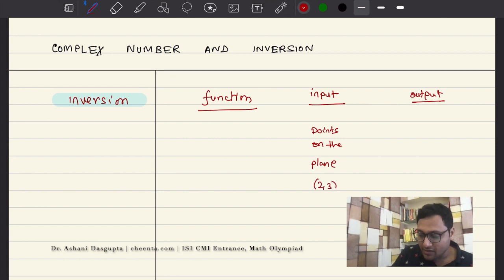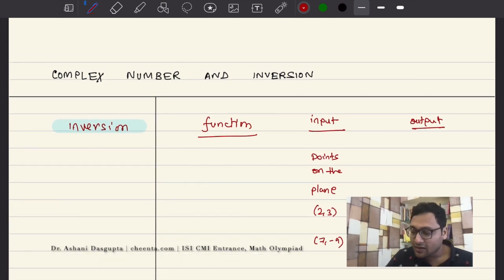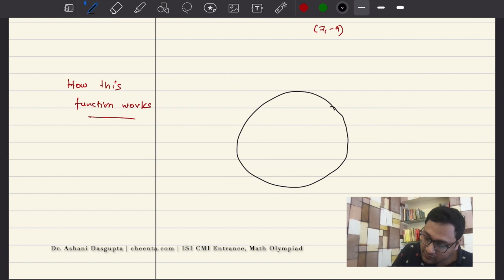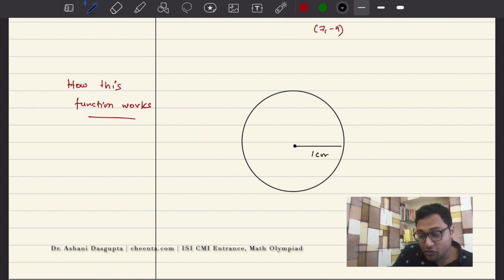Points on the plane. So points like (2,3), (7,-9) and stuff like that, right? And output values are also points on the plane. So it's a function that takes input points and gives output points. Now let me tell you how this function actually works. What you do is you take a reference circle whose radius is suppose 1 centimeter. The radius could be different. It could be 5 as well. But for the moment, we will keep it as 1 centimeter. And the center of the circle is O. This is the reference circle and sometimes known as the circle of inversion.